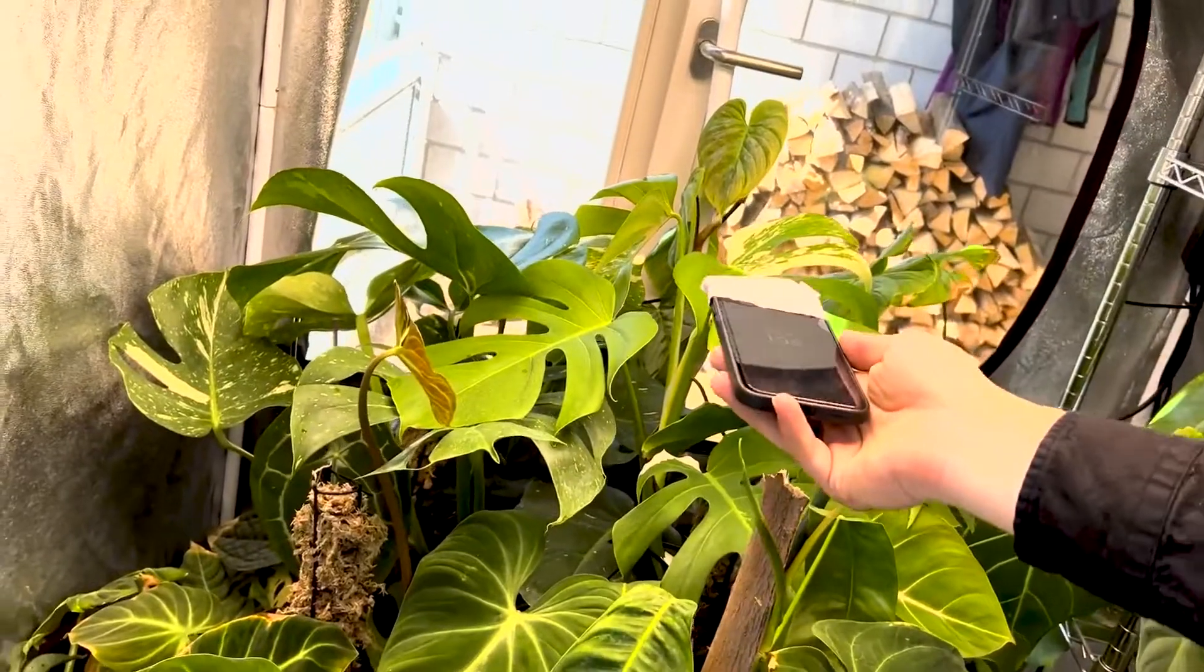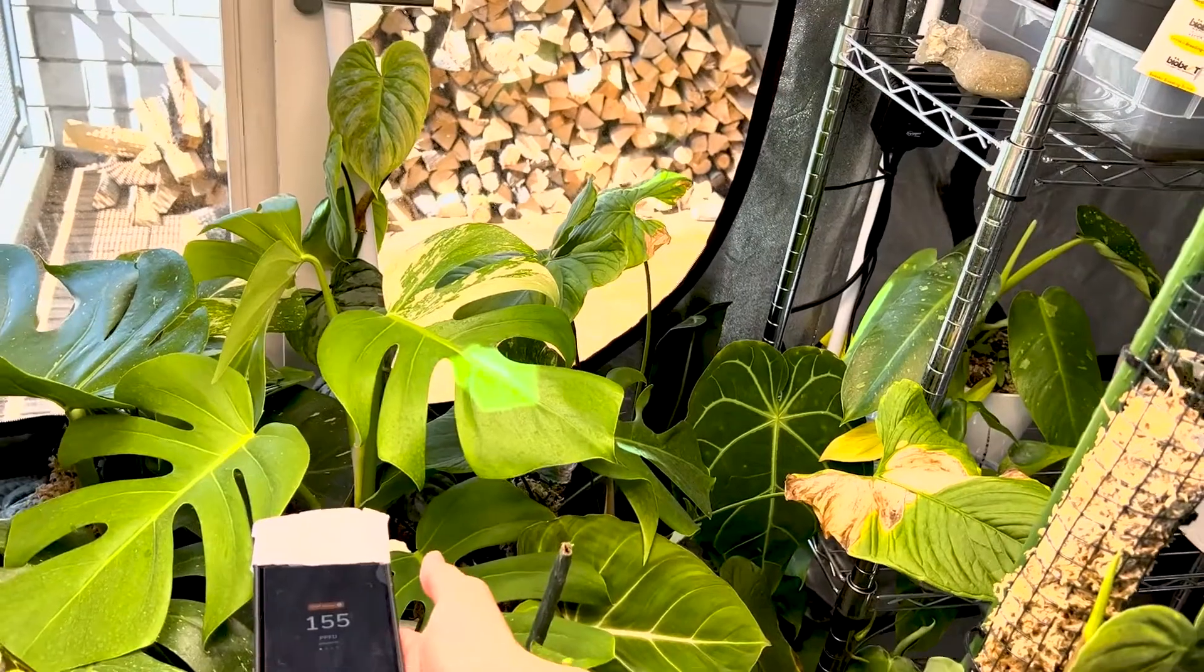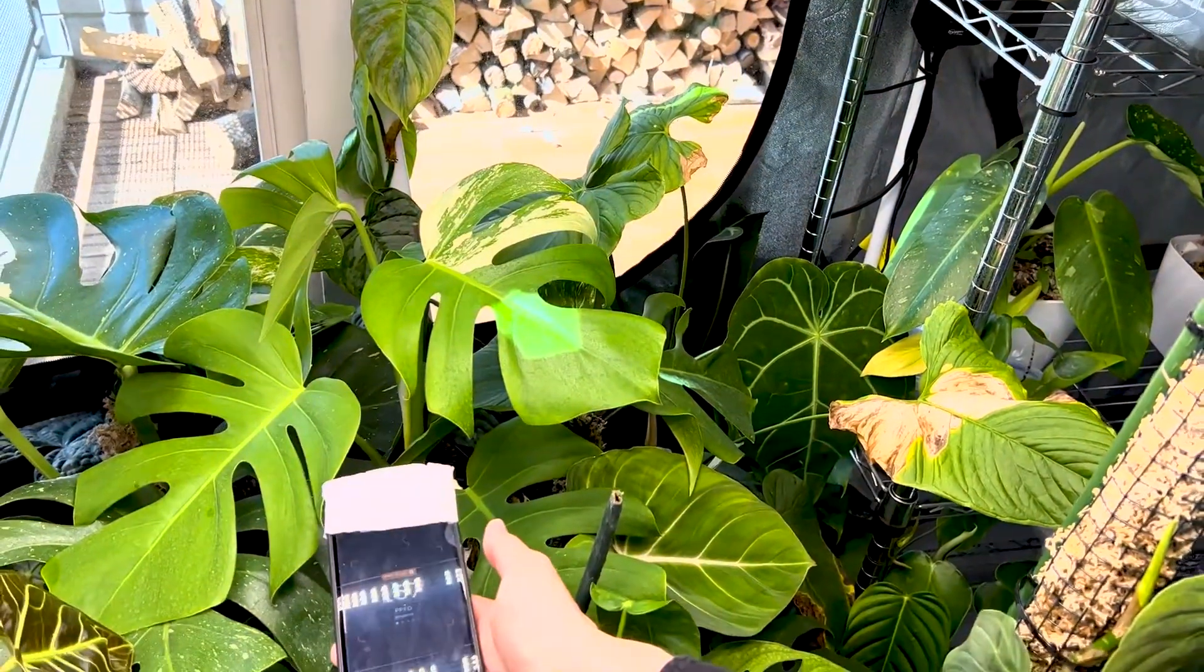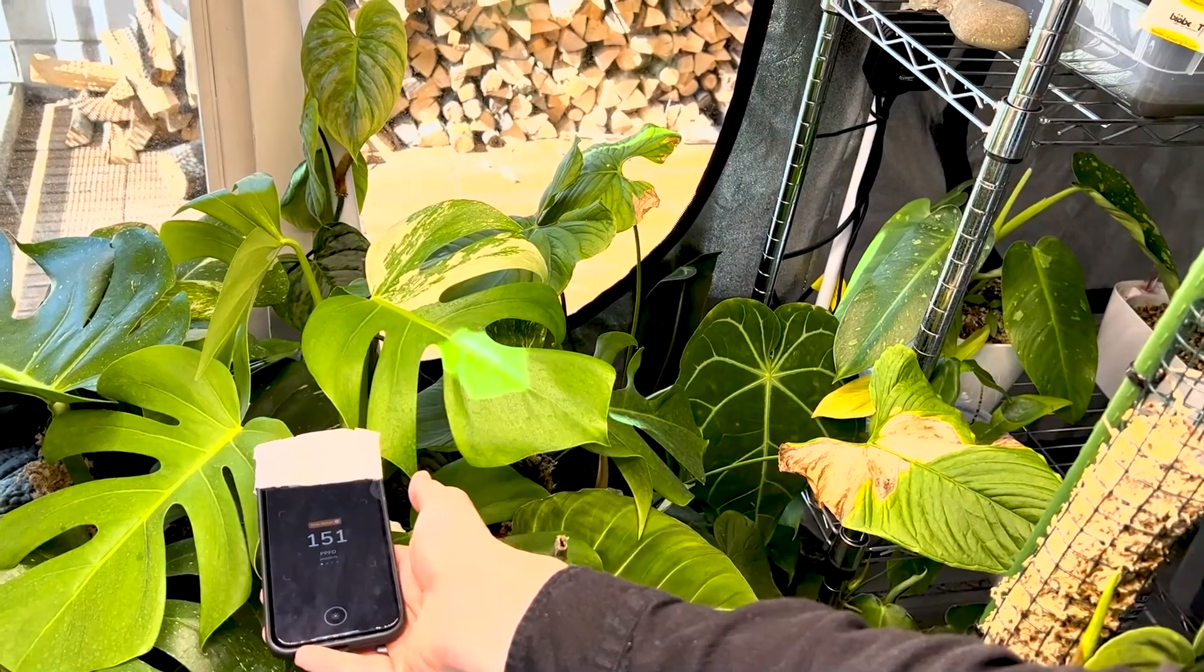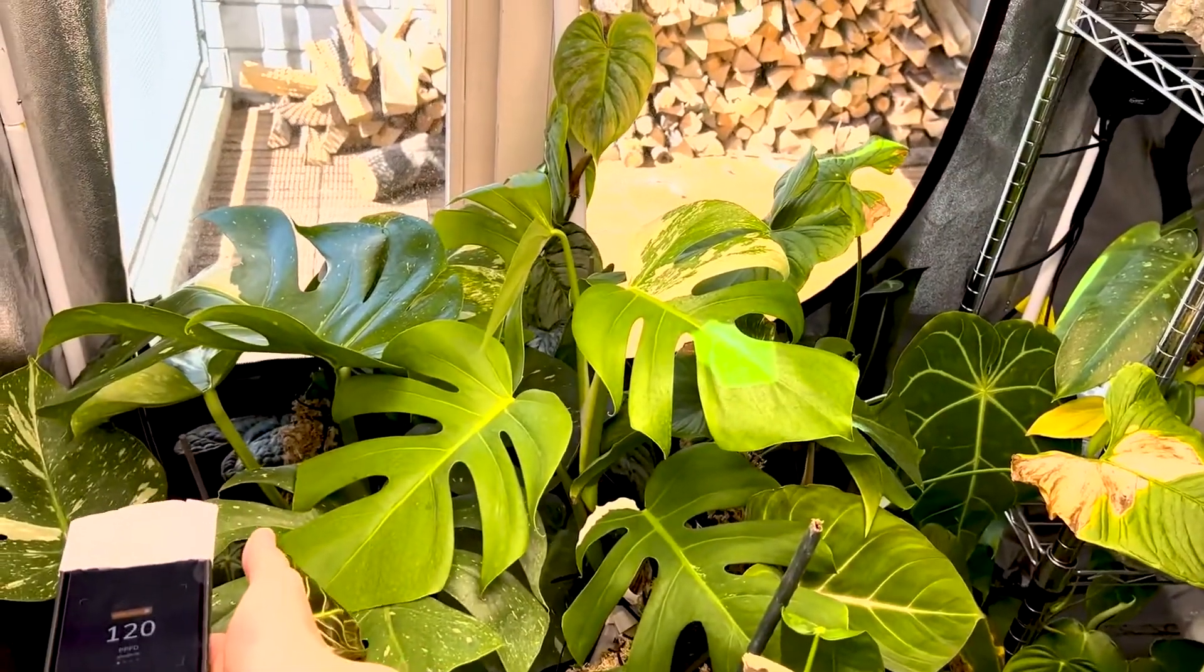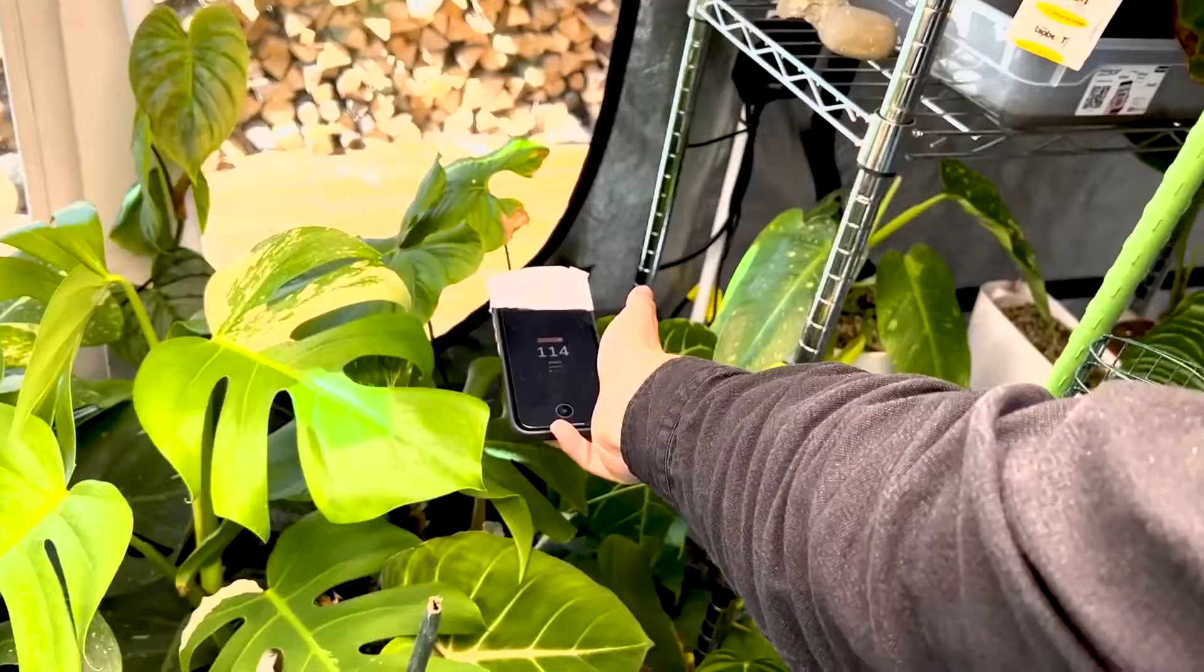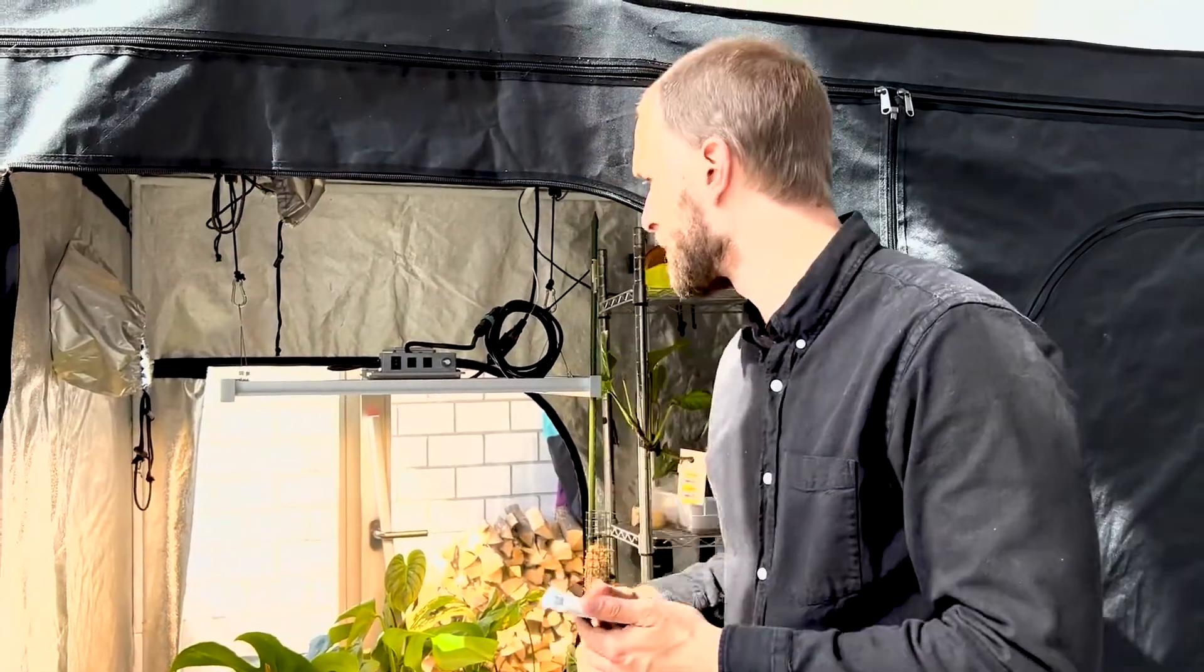So when I'm close to the canopy of my plants now I measure 156 PPFD. That's in the center about around 150 PPFD. If I go to the edges I still get around 120 PPFD. It's the same here. You have to remember that this is at 25% only. I will show you the values when I get to 100%.